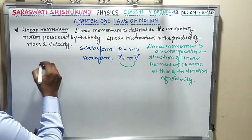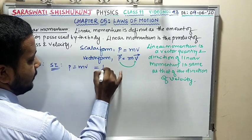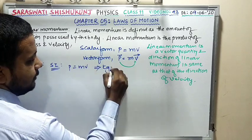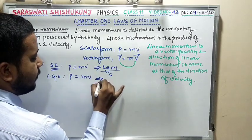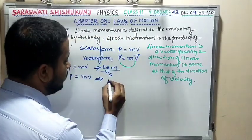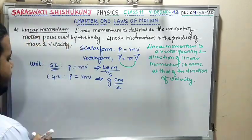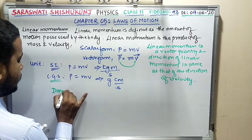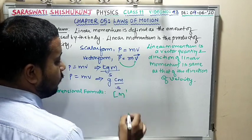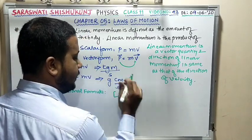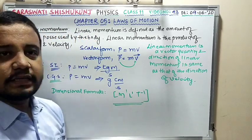For units: the SI unit of momentum is kg·m/s, since mass is in kg and velocity is in m/s. The CGS unit is g·cm/s. The dimensional formula for linear momentum is M¹L¹T⁻¹.